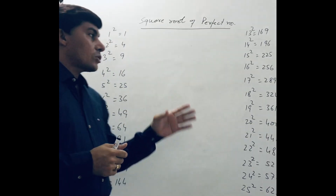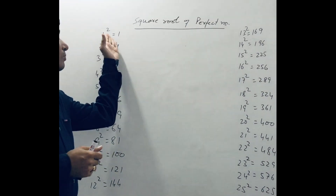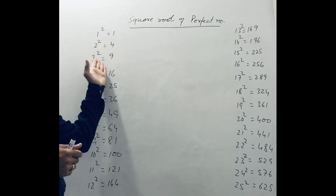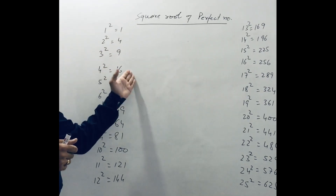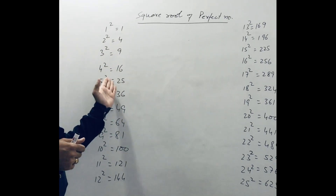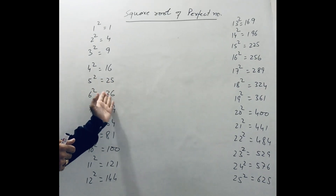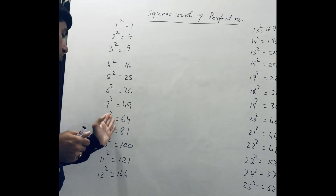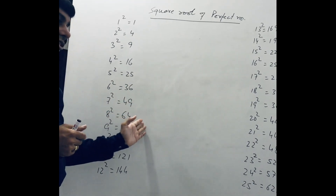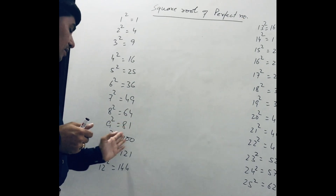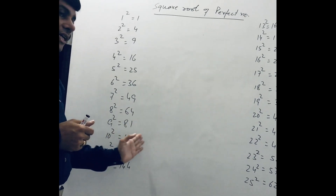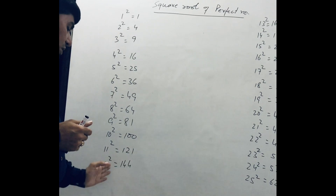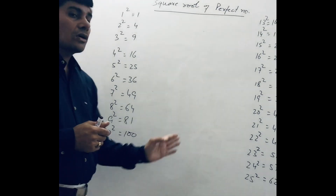We know that the square of 1 is 1, the square of 2 is 4, the square of 3 is 9, the square of 4 is 16, the square of 5 is 25, the square of 6 is 36, the square of 7 is 49, the square of 8 is 64, the square of 9 is 81, the square of 10 is 100, the square of 11 is 121, the square of 12 is 144.